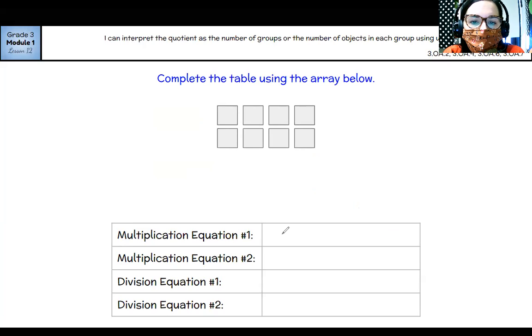So I have two rows and I have one, two, three, four columns. So two times four equals altogether eight. Our second multiplication equation, I can flip these factors to say that I have four columns and two rows, and I'm still going to have a product of eight.